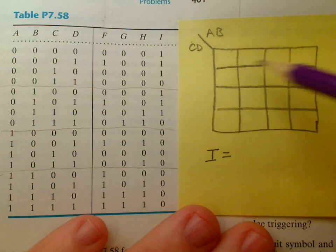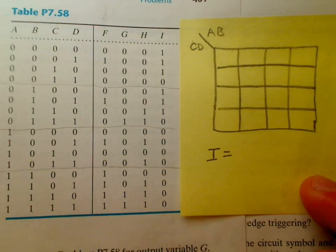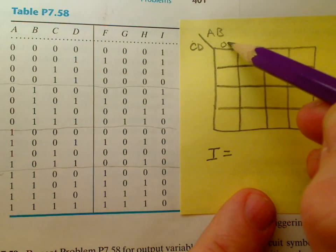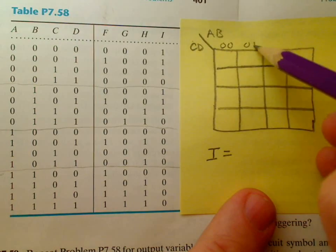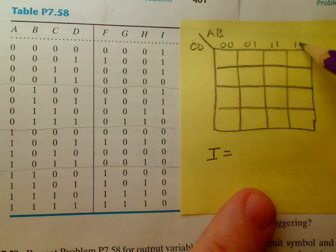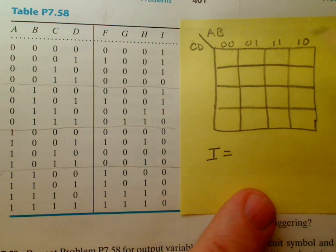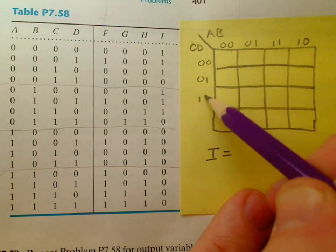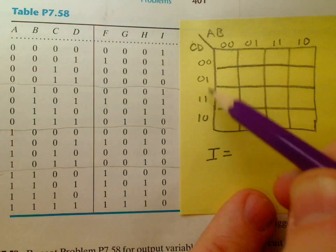So when you have a Karnaugh map, it will result in the circuit with the fewest number of logic gates if you do it properly. So you want to label these axes 0, 0, 0, 1, 1, 1, and 1, 0. Notice the flipping of the normal sequence here. Same thing on this one.